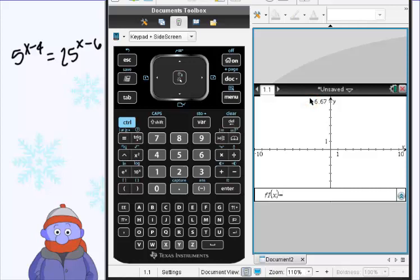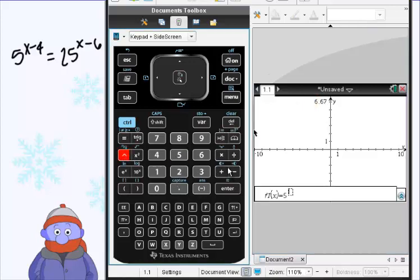Once you've got your graph chosen go ahead and put in 5 to the x minus 4 power and then arrow key down and put in the next equation, which is 25 to the x minus 6.